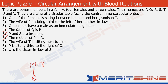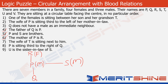Statement six says that the mother of P is R. So let's draw R here. Since R is the mother of P, she has to be a female, so let's write F. So R is a female, P is a male her son, and Q is either the daughter or the son of P. Statement five says that P and S are brothers, so let's put S here and write M because S is also a male.